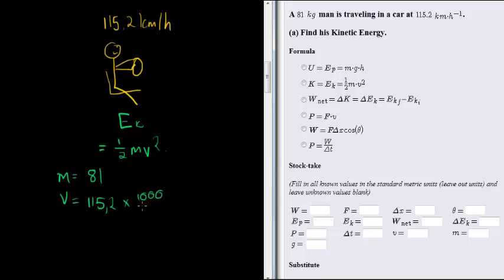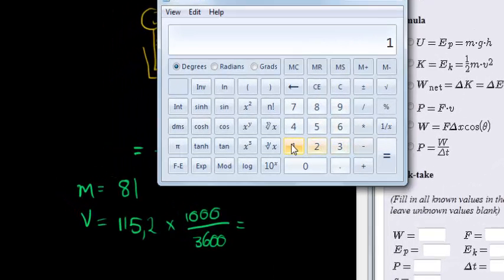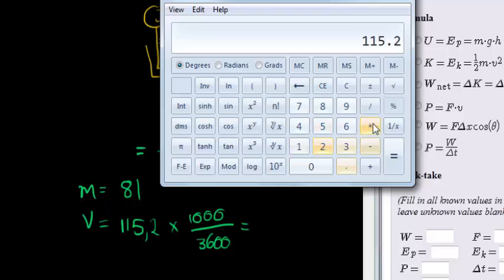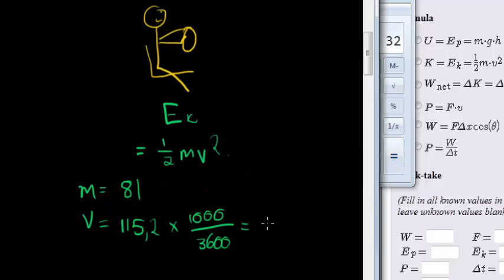We multiply with a thousand, divide with 3600. And what do we get? Well, we get 115.2 times 1000 divided by 3600 gives me 32. That's a beautiful answer. 32, traveling at 32 meters per second.